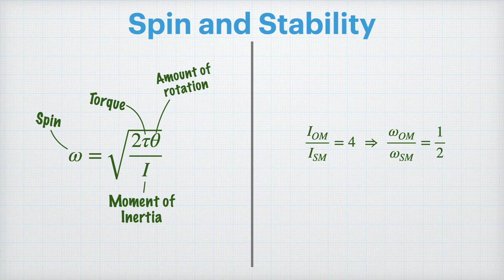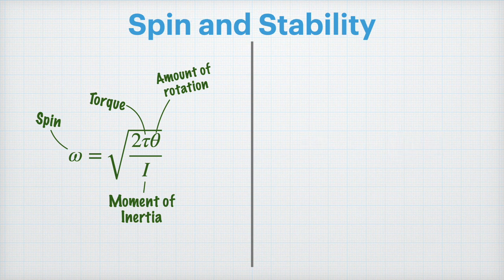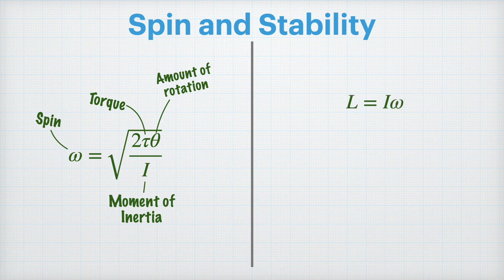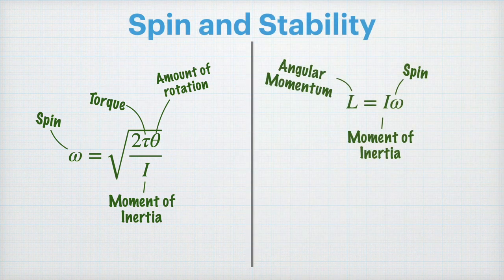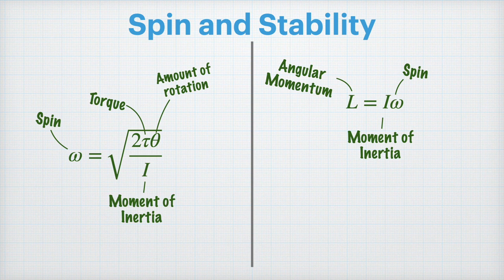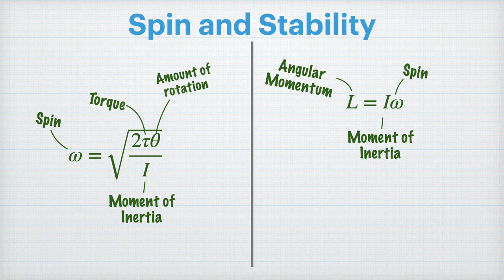But spin isn't actually what we care about, contrary to some popular advice. What we actually care about is the gyroscopic effect that comes from the spin, or in other words, angular momentum. Now again we'll get some labels up there, but angular momentum is equal to not only the spin, but the spin times the moment of inertia. This is what's responsible for the gyroscopic effect.